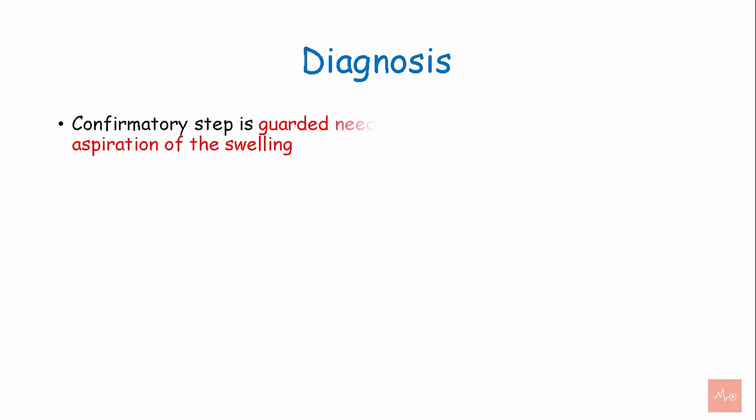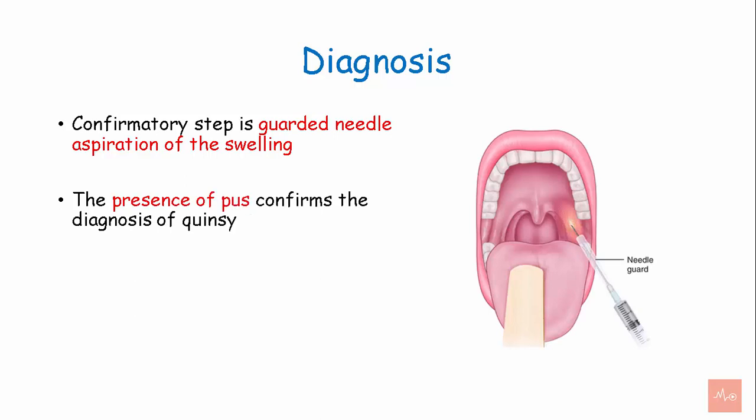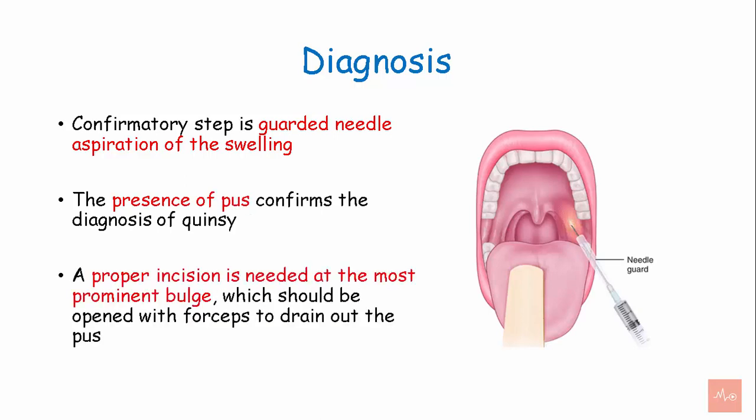Diagnosis. The confirmatory step is guarded needle aspiration of the swelling. The presence of pus confirms the diagnosis of Quincy. A proper incision is made at the most prominent bulge, which is then opened with forceps to drain out the pus.